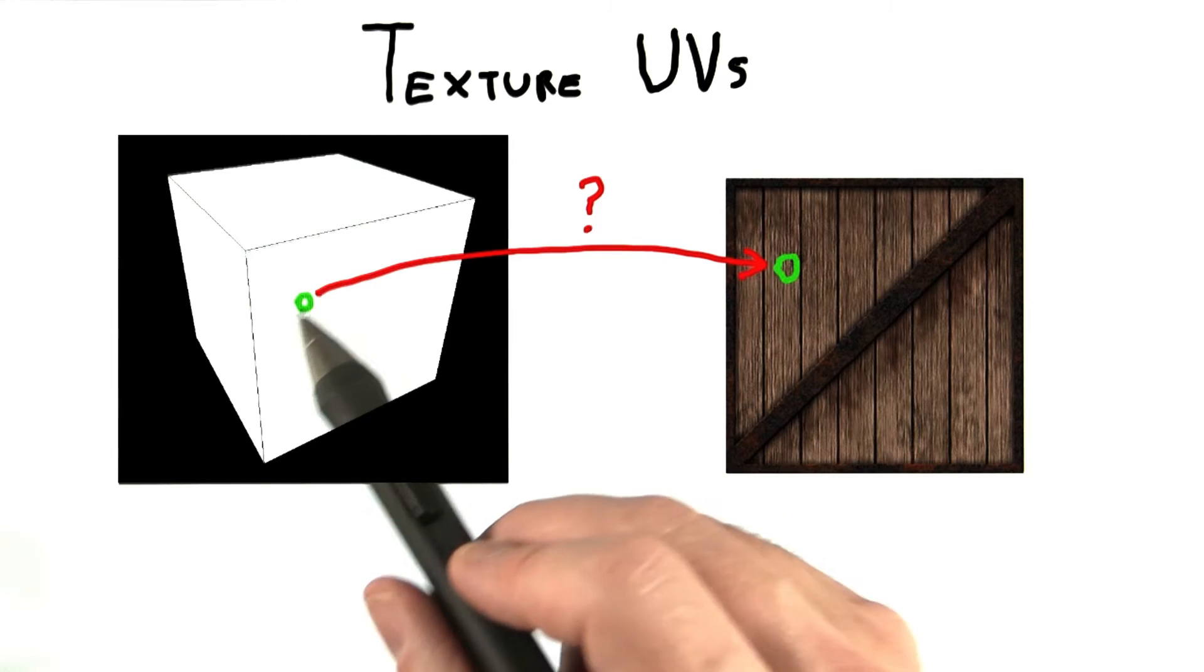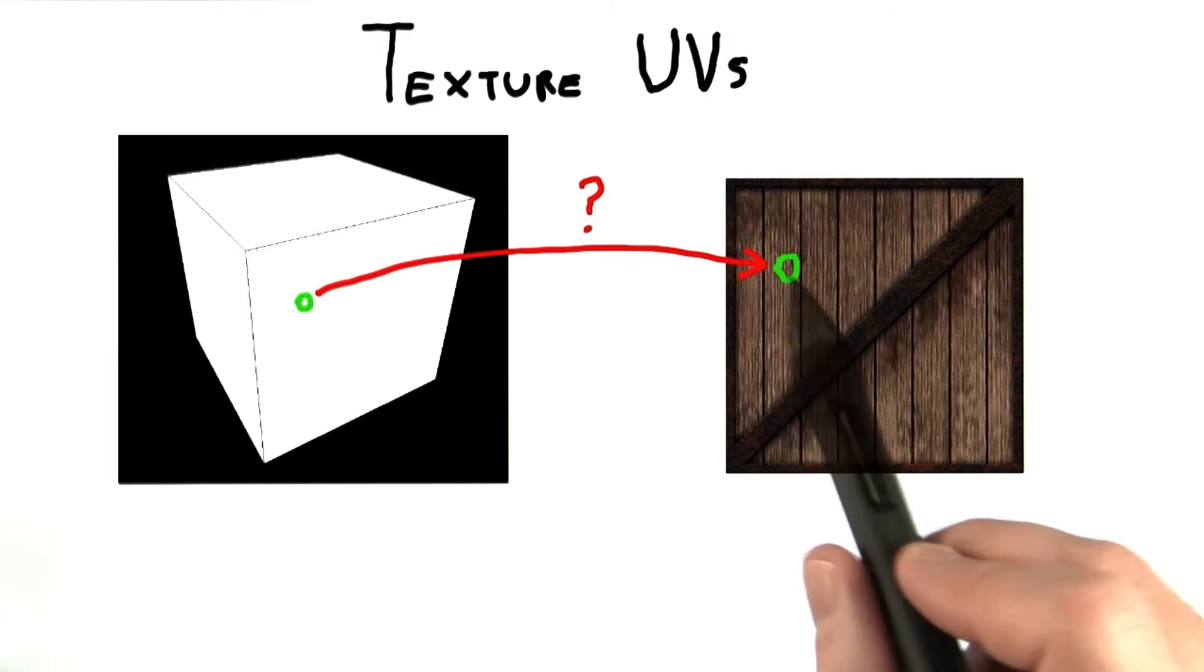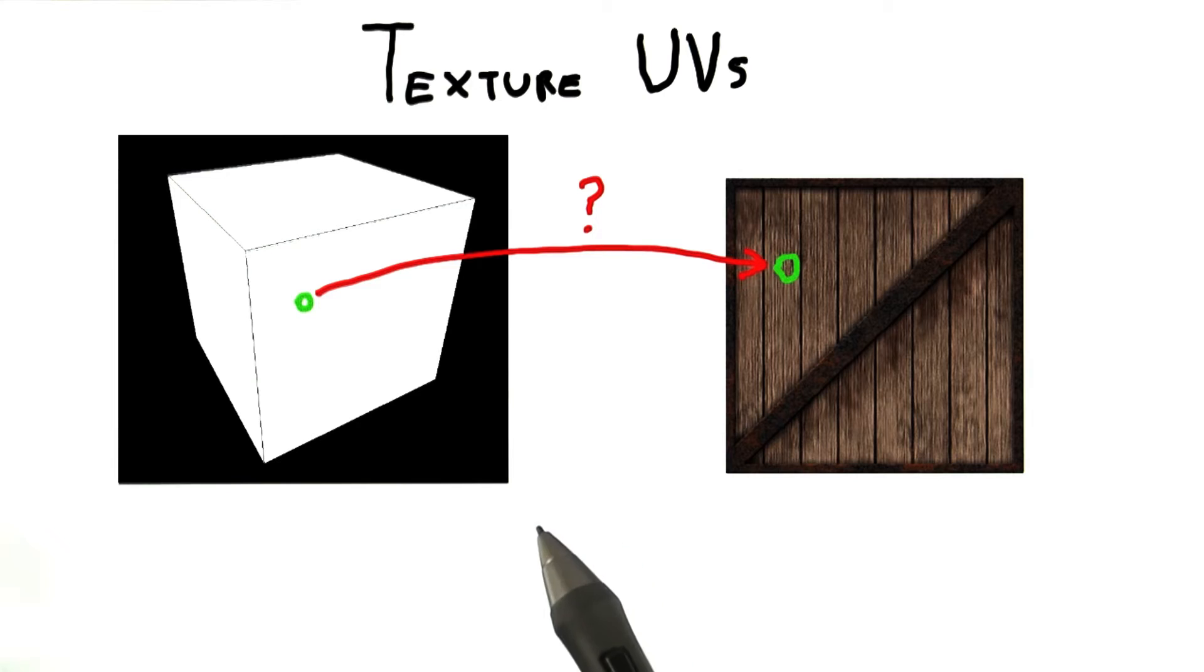Given a location on the box surface, how do we find the corresponding location on the image? This is potentially a tricky problem.